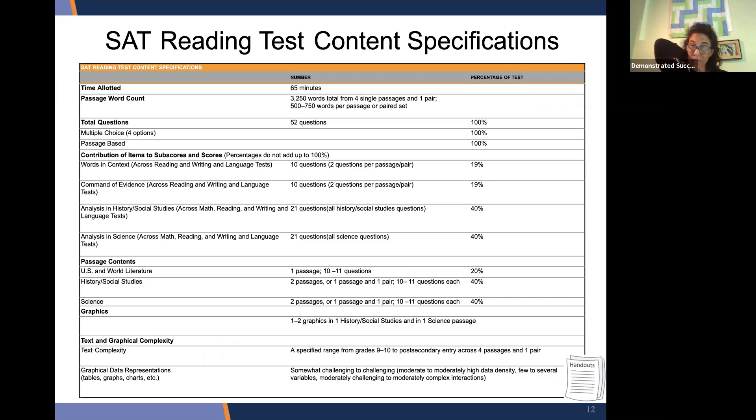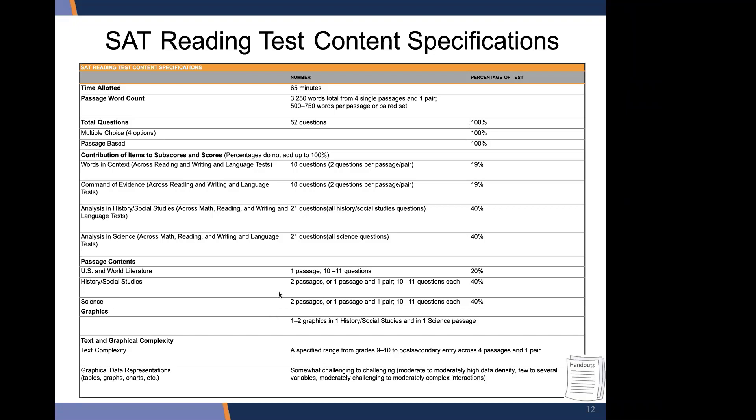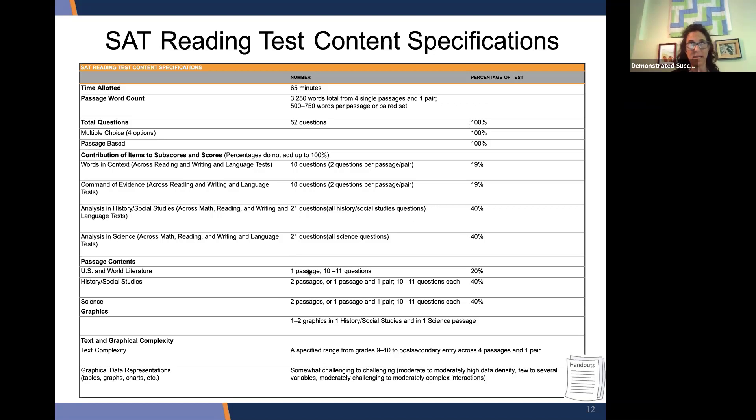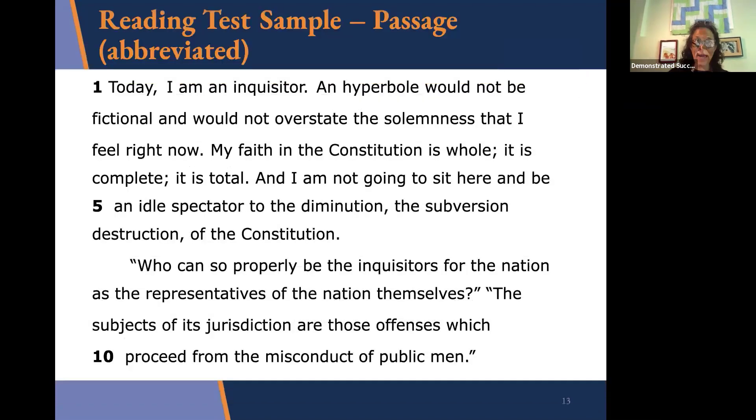So we're going to go over the content a little bit, the evidence-based reading. So the range of text complexity is from ninth through post high school, freshman year of college, basically, or beyond. The emphasis is on using evidence and reasoning to support inferences. The emphasis really aligns with the common core standards, basically, this use of evidence and source analysis. And obviously kids are asked to incorporate data and use graphics. The words in context focuses on word choice with a lot of emphasis on tier two words and phrases, which is your academic vocabulary.